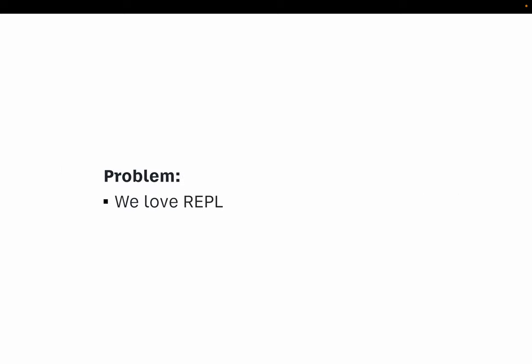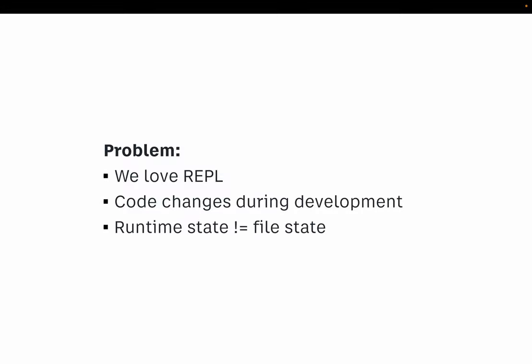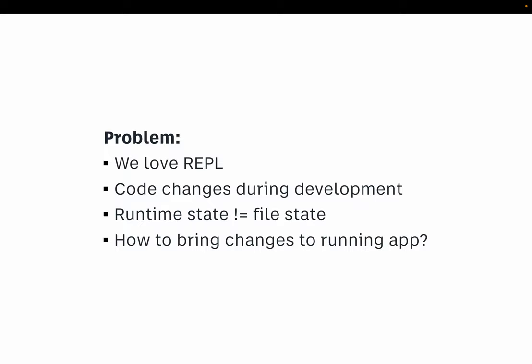So the problem: we all love REPL in Clojure, right? REPL means interactive development. As you work, you change your code, and you want to see these changes applied to runtime state. The problem here is that the runtime state you see in your application is not always the same as file state. So you change the file, but it doesn't immediately apply to runtime state. So you have to do something. That's the ultimate question — how do we do that?